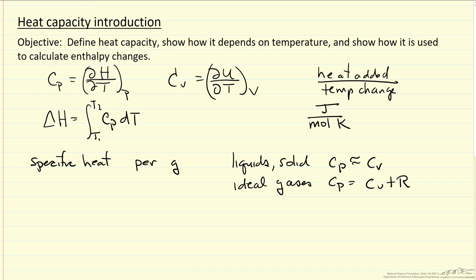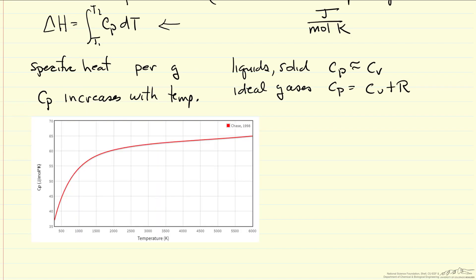Something that's important you want to keep in mind is that Cp increases with temperature. This means we have to do an integration here because Cp is a function of temperature. Let's give an example for carbon dioxide to make it clearer how it changes with temperature. For CO2 over a large temperature range, you can see particularly this range between about 400 and maybe 1500 Kelvin, the heat capacity changes significantly.